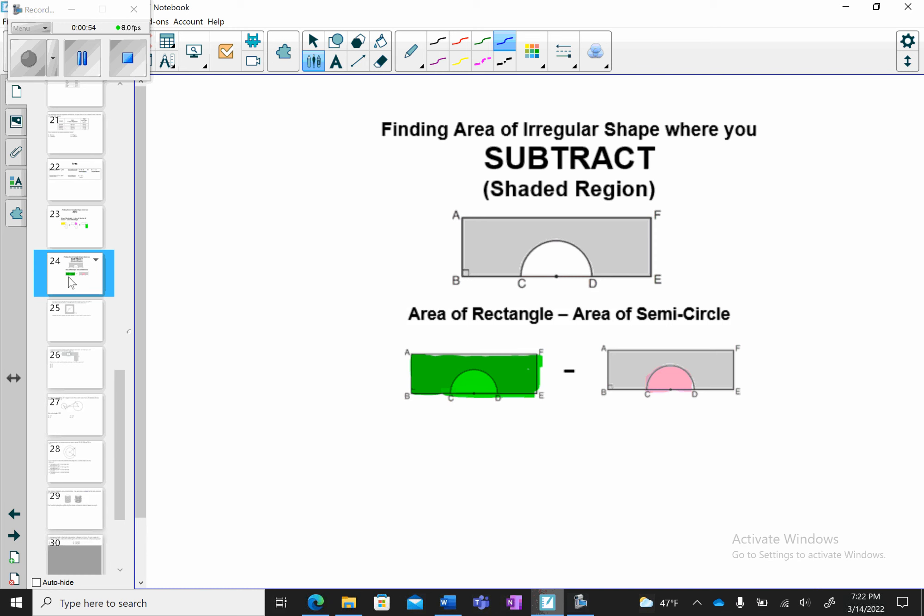Whereas if you see a shaded region, you're going to have to subtract. So, for example, you see that rectangle, you would find the area of the entire rectangle. Then you find the area of the semicircle, which is half a circle, and you would subtract. And that would give you the area of the shaded section.